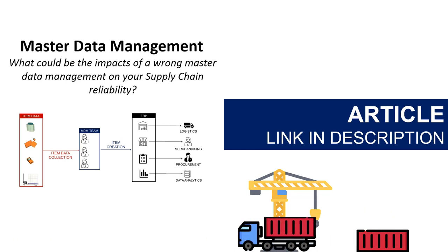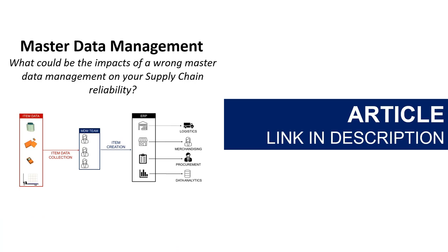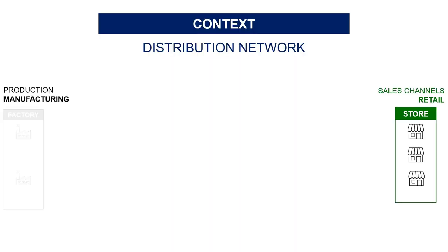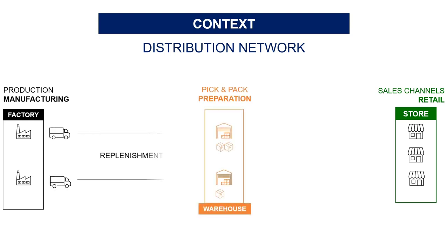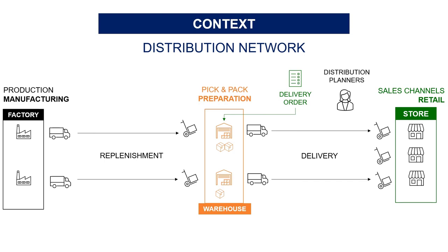Using an example of a global supply chain network, we will see what could be the impact of bad master data management on your end-to-end supply chain operations. Let's take the example of the global supply chain network of a clothing retailer. You have stores all around the world that are replenished by regional and global warehouses storing goods produced in factories.